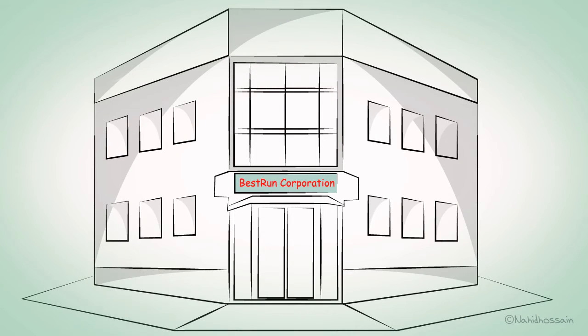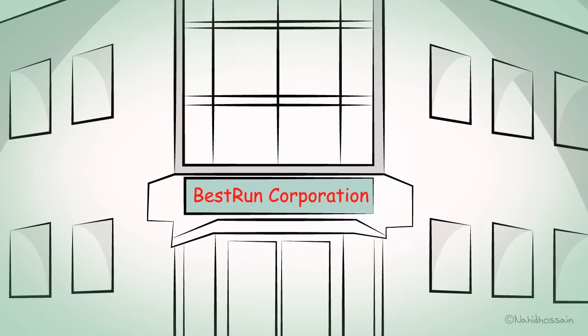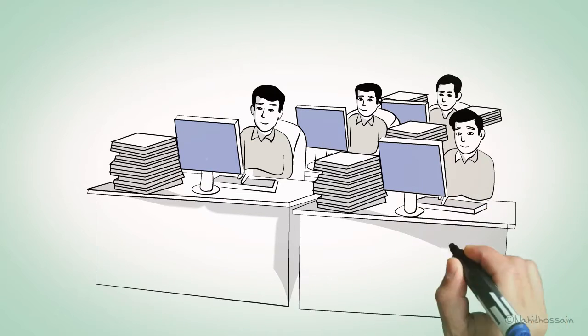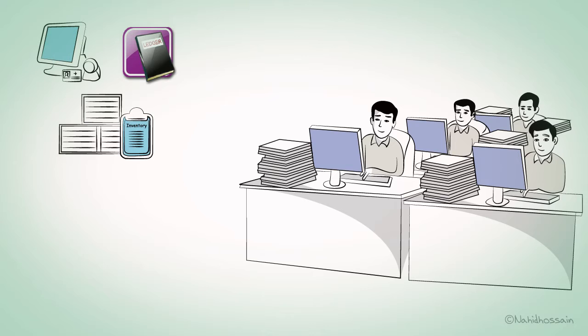This demo will focus on the Best Run Corporation. The Best Run Corporation today has many different systems. It's all over the place, and there's lots of data. Some of the systems include point of sale, general ledger, and inventory systems.